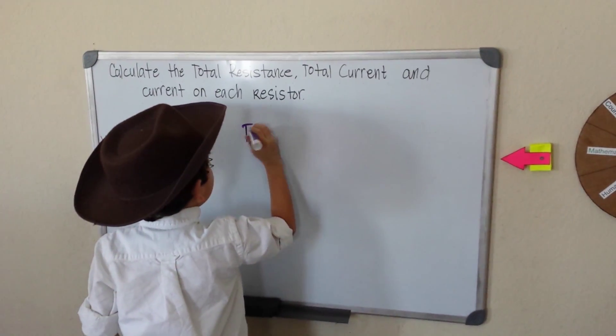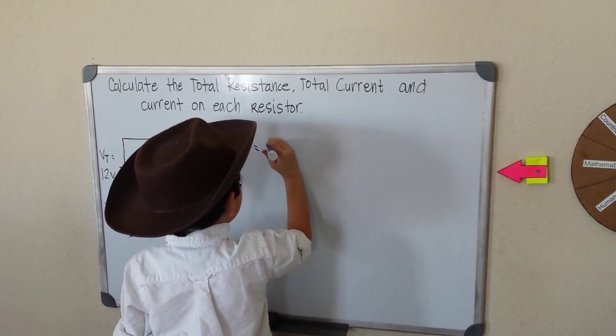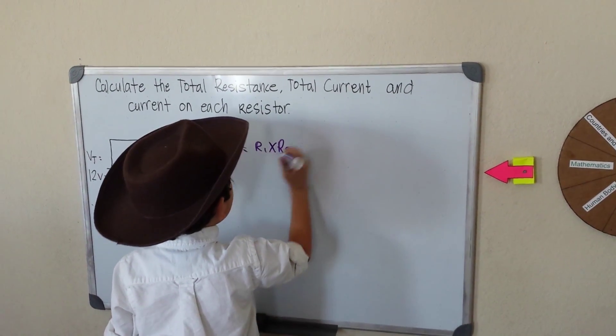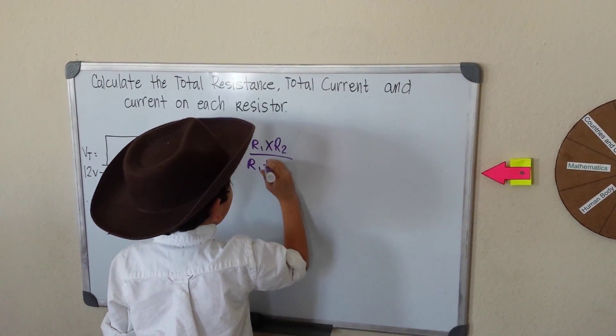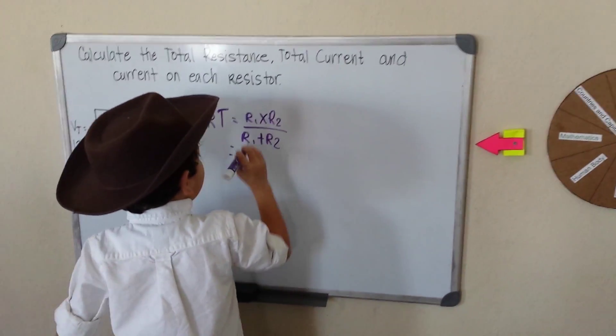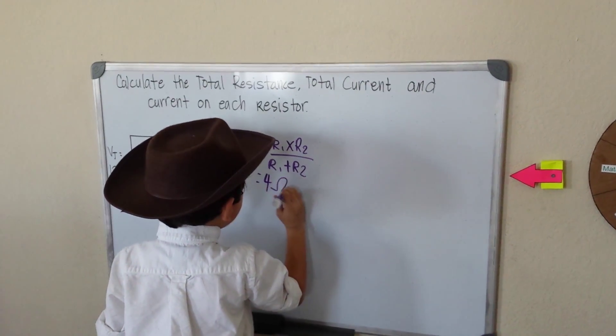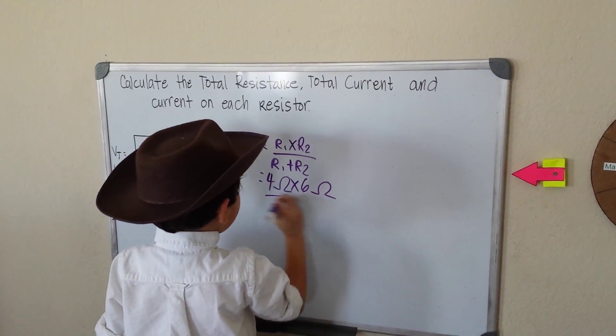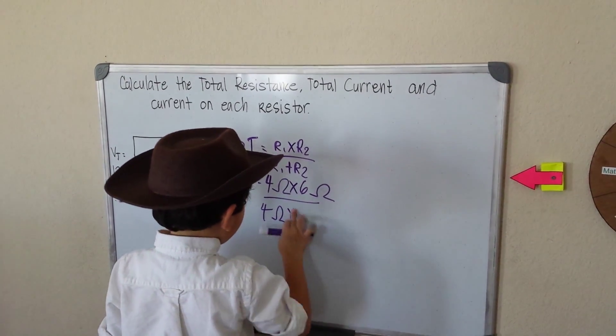So our total resistance, total resistance equals R1 times R2 over R1 plus R2. So R1 is 4 ohms times 6 ohms over 4 ohms plus 6 ohms.